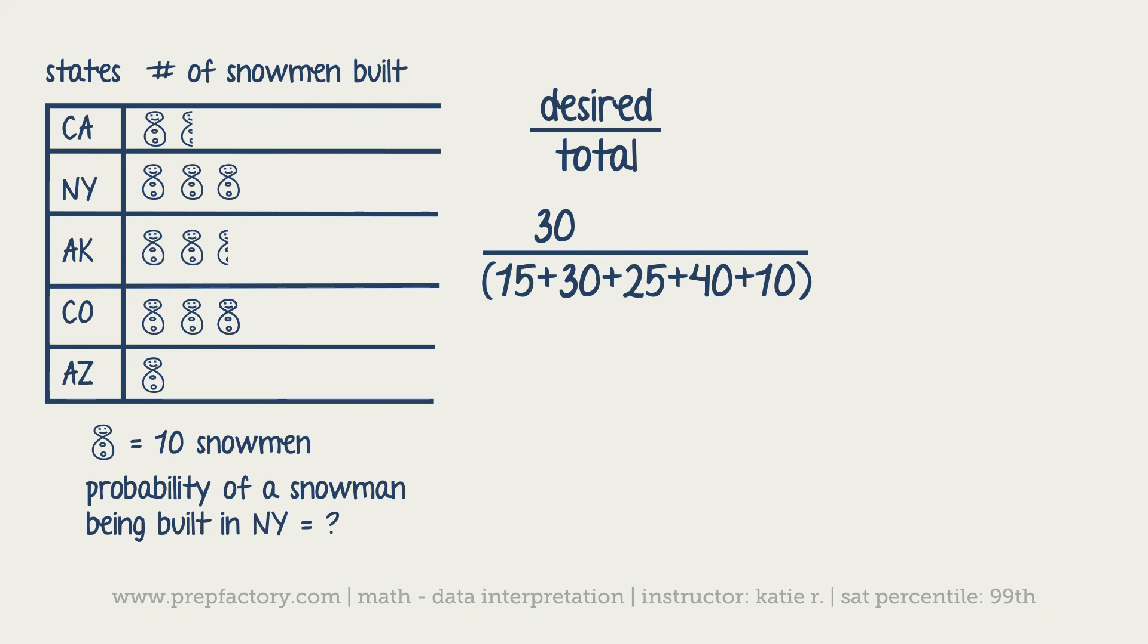We've got our 30, and then we've got to add up all of our snowmen. We've got 30 out of 120 snowmen. Now the trick is to just figure out how to simplify that. We've got two zeros, so it's just 3 over 12, which is 1 over 4. So there's a one-fourth, or depending on how they ask it, 25% probability of your snowman being born in New York. Let's go ahead and look at the next type of problem.